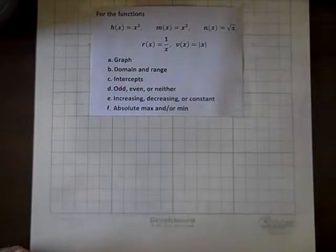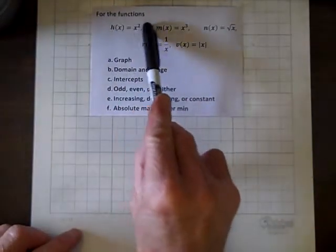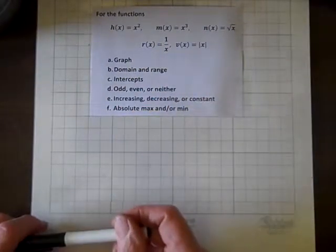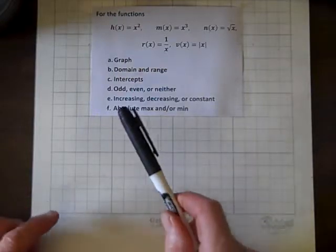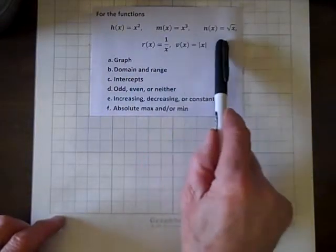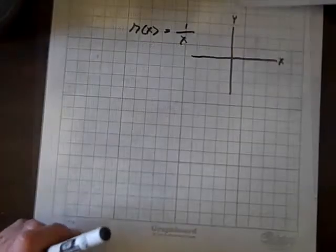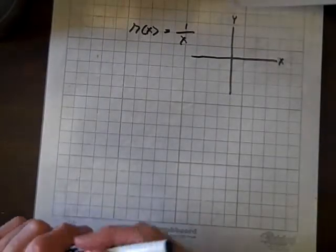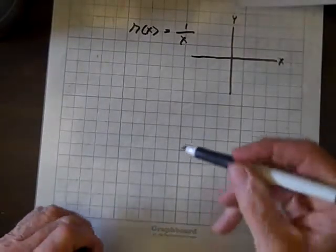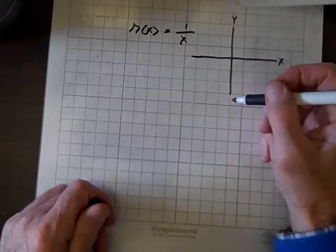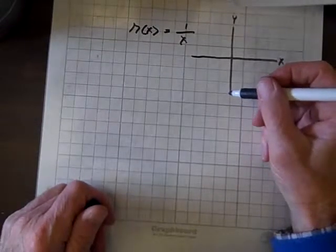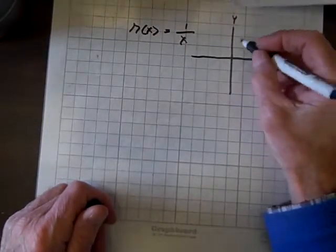In part one, we evaluated the top row of functions. We will now evaluate the second row of functions. The function r(x) = 1/x is the equation of a hyperbola.